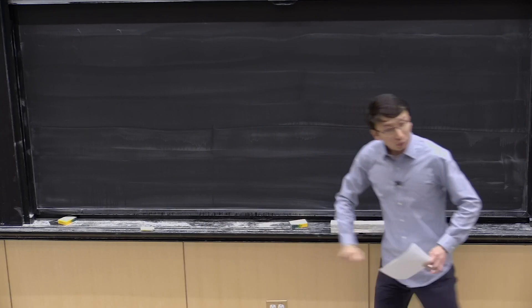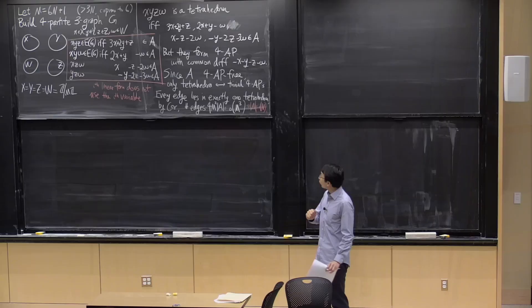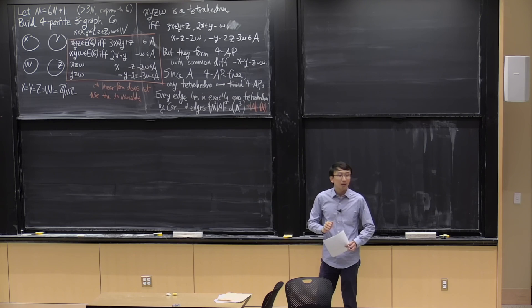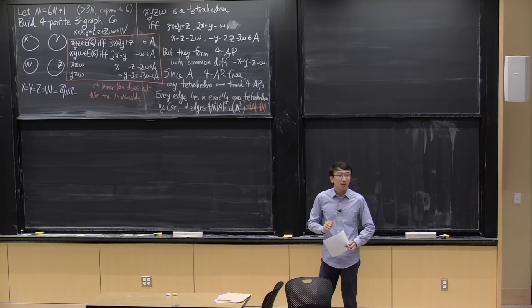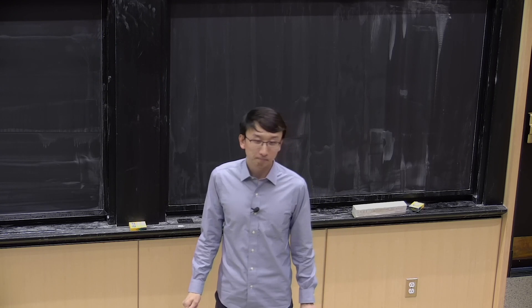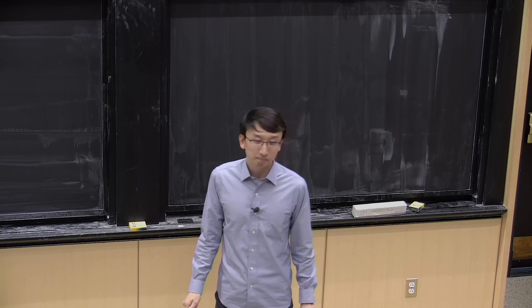Where do we use that m is coprime to 6? Great question. To solve for the last variable in each linear form, we may need to divide by 2 or 3, and to do that we need coprimality with 6. I'm hiding some details, but to verify that every edge lies in exactly one tetrahedron requires a tiny bit of work.